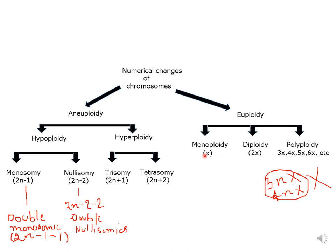Euploidy is classified as monoploids, which have only one set of chromosomes; diploids, which have two sets of chromosomes; and polyploids, which have more than two sets of chromosomes. You have to remember that polyploids are represented with 3x, 4x, 5x, 6x, and so on, and not by n.